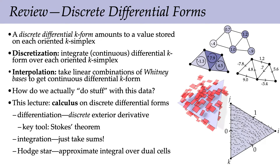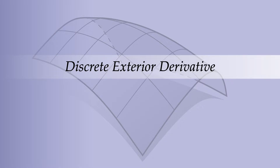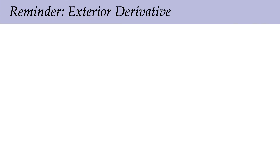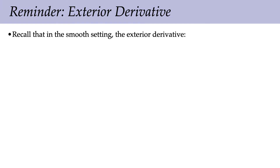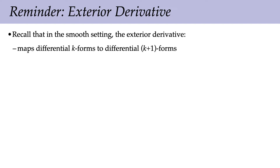The discrete exterior derivative really only depends on connectivity — which simplices are incident on which other simplices. The Hodge star captures all the geometric information: lengths, angles, volumes, and so forth. This separation can be very useful because it lets you see clearly where and how you need to change the geometry, and where the curvature or metric factors into your equation.